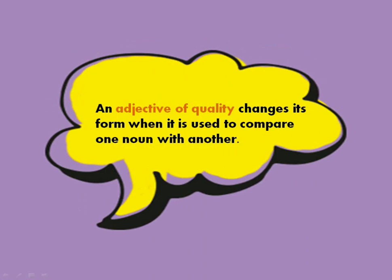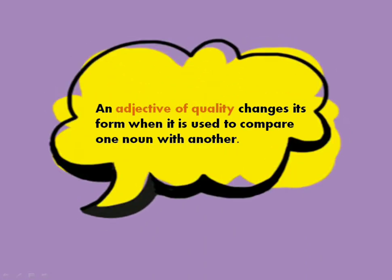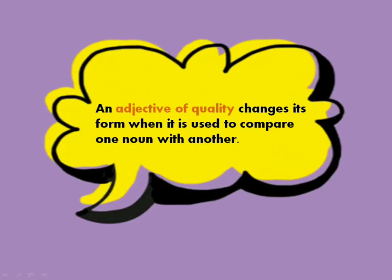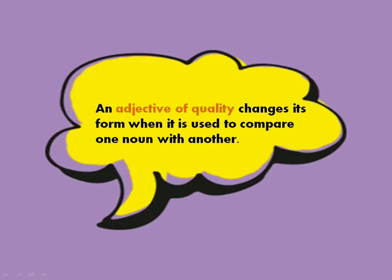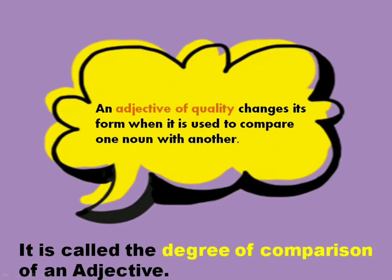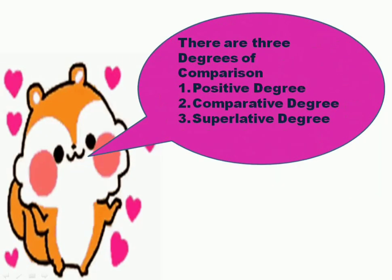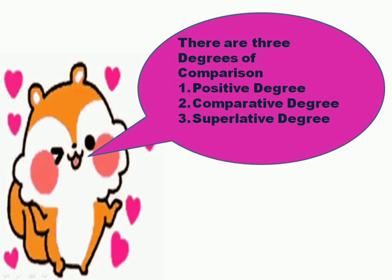An adjective of quality changes its form when it is used to compare one noun with another. It is called the degree of comparison of an adjective. Let's revise them very quickly. There are three types of degrees of comparison: positive degree, comparative degree, and superlative degree.